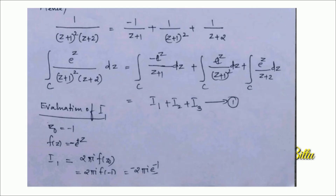Evaluating I₁: the integral over C of −e^z/(z+1) dz has singular point −1 inside C. Applying Cauchy's Integral Formula with Z₀ = −1 and f(z) = −e^z, we get I₁ = 2πi·f(−1) = 2πi·(−e^(−1)) = −2πi·e^(−1).